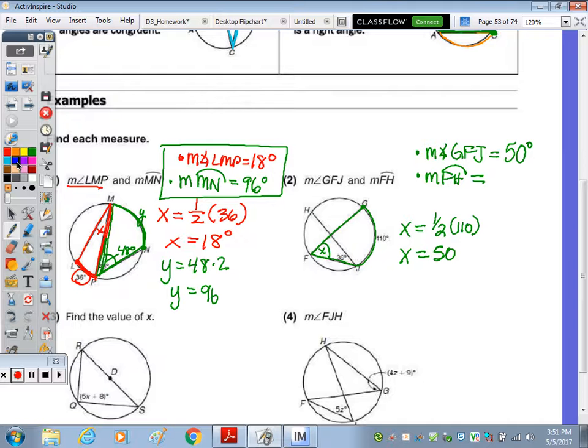Next I need to find the measure of arc FH. So FH goes from here to here. Following the rays that form the angle would be this and this, and it says the angle is 36. So I'm going to call this Y to show my work. Y is going to be equal to double 36, which is 72. So the measure of arc FH is 72 degrees.